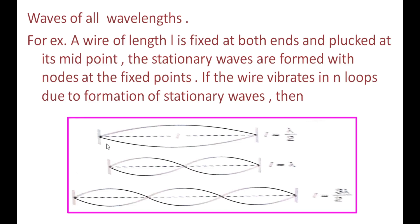The nodes and antinodes form stationary waves. When a wire is fixed at both ends and plucked at its midpoint, stationary waves are formed. If the wire is fixed, we get: 1 node — λ/2; 2 nodes — 2λ/2; 3 nodes — 3λ/2.